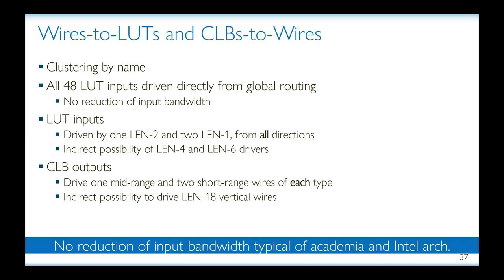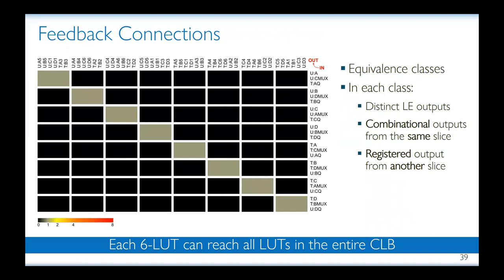Here too, direction vector clustering breaks this regularity to some extent. Finally, we thought it important to analyze the CLB feedback connections. In this heat map, rows are CLB outputs and columns are LUT inputs. There are eight equivalence classes. In each driver class, the logic element outputs originate from different logic elements. Additionally, combinational outputs come from the same slice, while the registered output comes from another slice. This could reflect the physical distance of the driven wires from the actual location of the drivers, and the fact that the registered output is probably more likely to tolerate higher delays. We found that each six-input LUT can reach all LUTs in the entire CLB, either directly or via the multiplexer of the logic element.